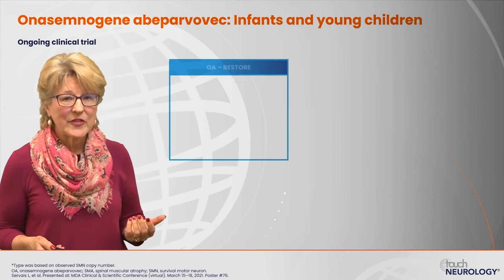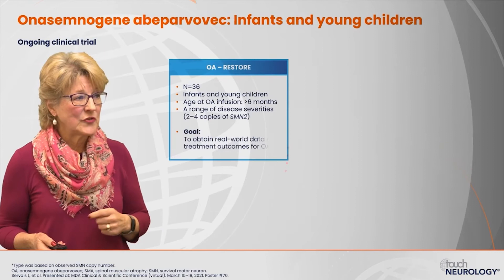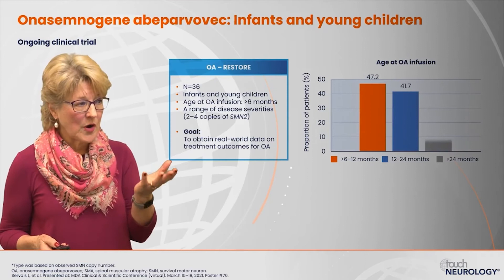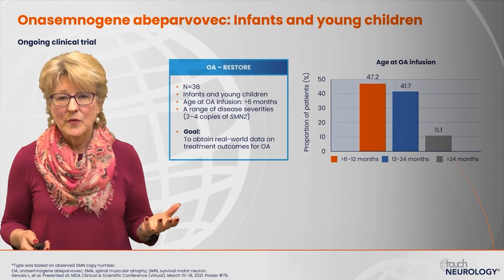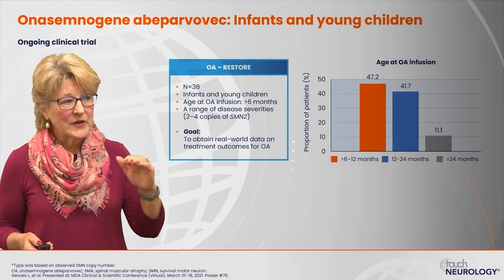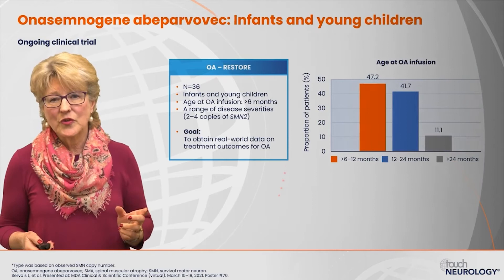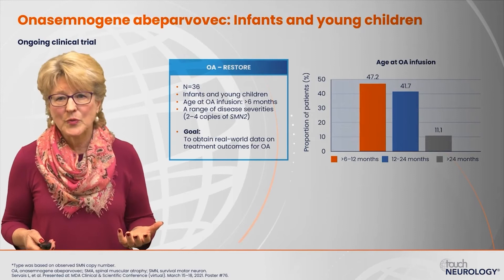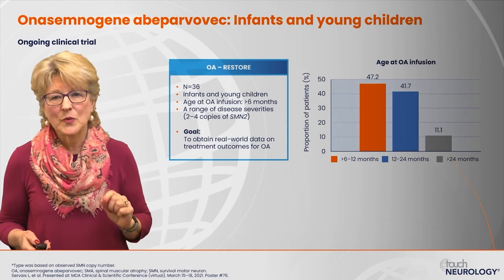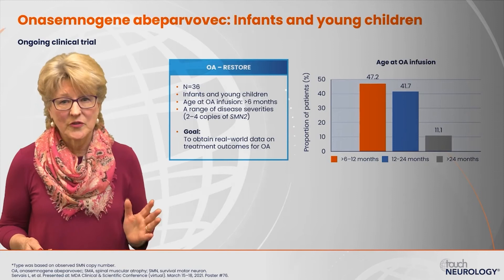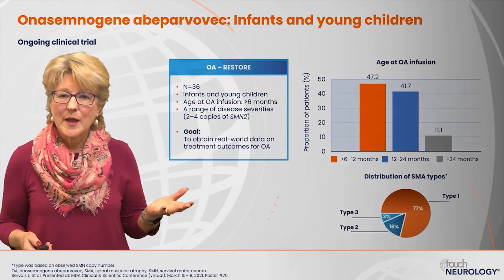For onasemnogene abeparvovec, there is an ongoing registry called RESTORE looking at treated patients. The majority of patients in this registry were treated at around six months of age or greater, with the next group in the 12 to 24 month age range, and some older than 24 months through an expanded access program. The FDA-approved indication in the United States is for patients under the age of two. Looking at the distribution of types, the majority of patients treated were type 1 patients, as they present early and type 1 is the most prevalent.